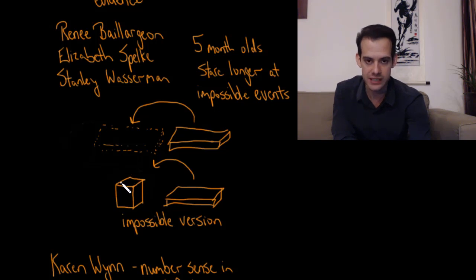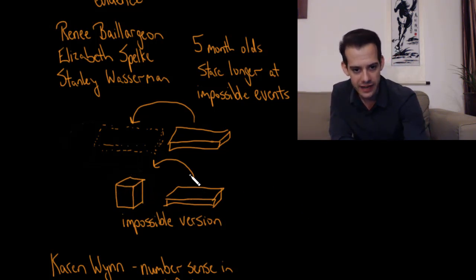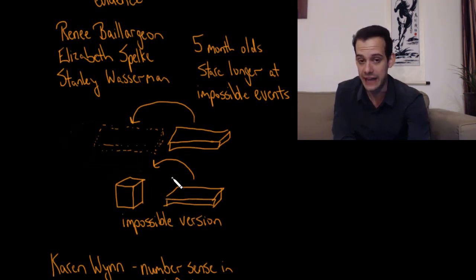As this is rotating, when it gets fully vertical here the infant can't see the object anymore. So if they really had no understanding of object permanence then they wouldn't be surprised that it continued to rotate all the way, because as far as they're concerned that object is gone.